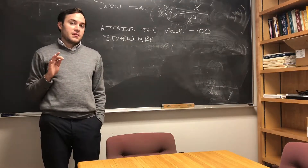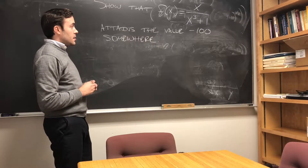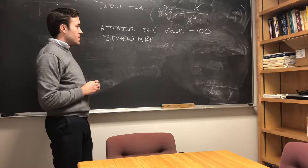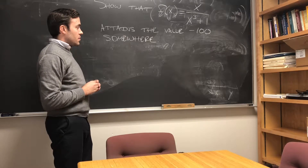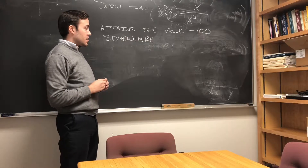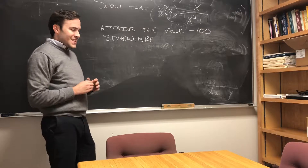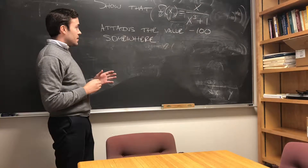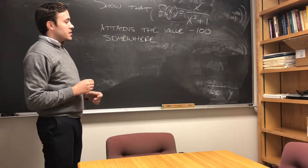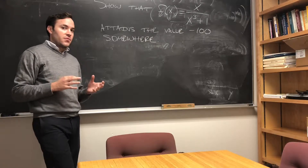I left this problem as an exercise at the end of the last class, and I want to go through it because I think it's got an interesting addition to the Intermediate Value Theorem that can be pretty useful in some situations. The idea here is you're looking at this function, x over x cubed plus 1, and you want to show that it's going to have the output value of negative 100 somewhere.